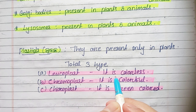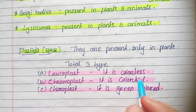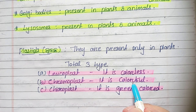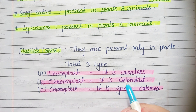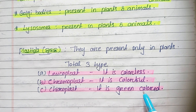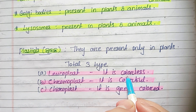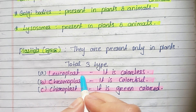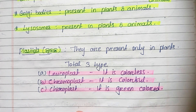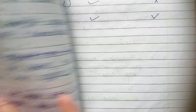Leucoplast is colorless. Chromoplast is colorful — for example, we see colorful flowers. Chloroplast is green in color. Leucoplast is colorless, chromoplast is colorful, and chloroplast is green.